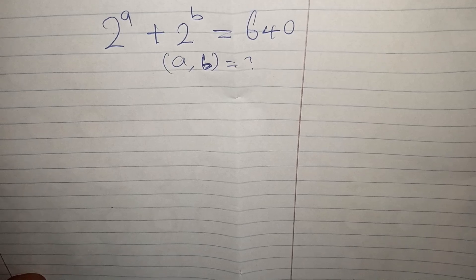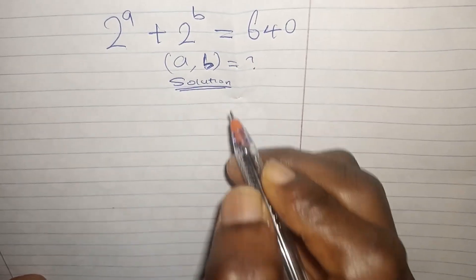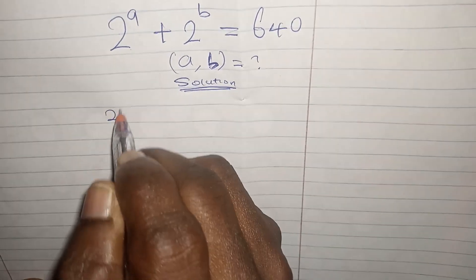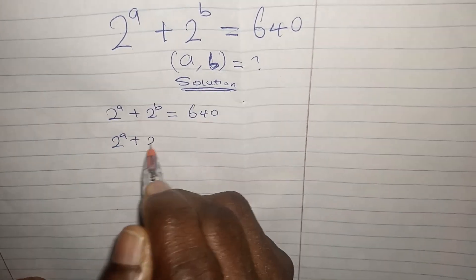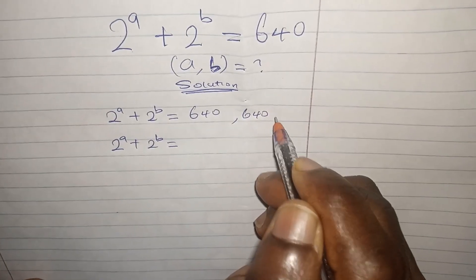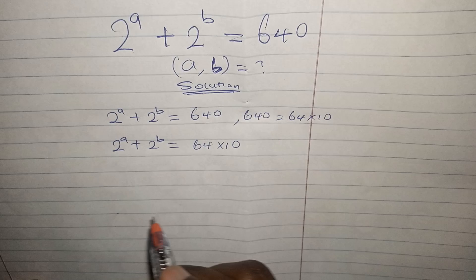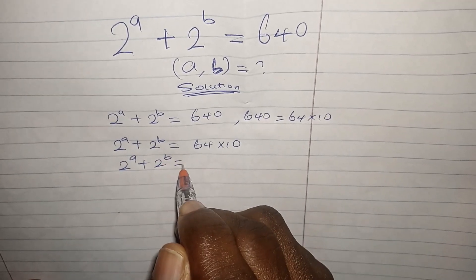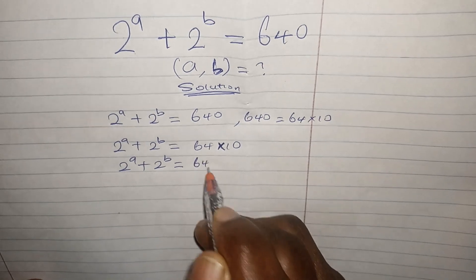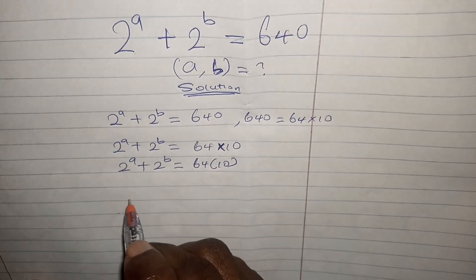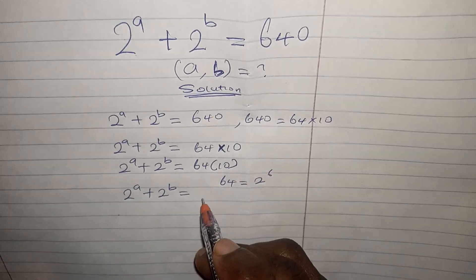So let's see how we can find the values of a and b. We write the equation: 2 to the power of a plus 2 to the power of b equals 640. Now, 640 is also equal to 64 times 10, so we can write 64 as 2 to the power of 6. So we have 2 to the power of a plus 2 to the power of b equals 2 to the power of 6 times 10.